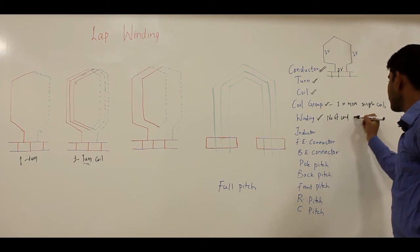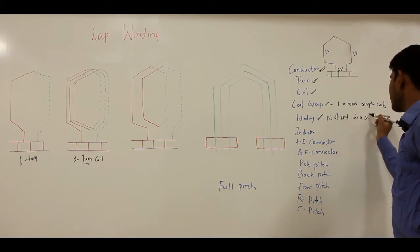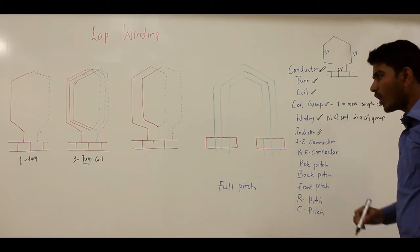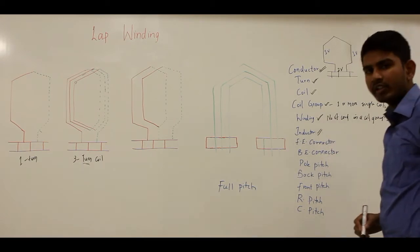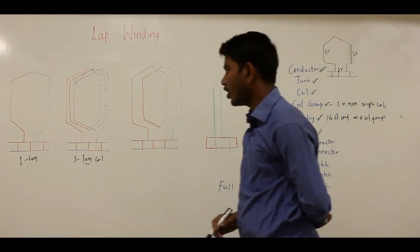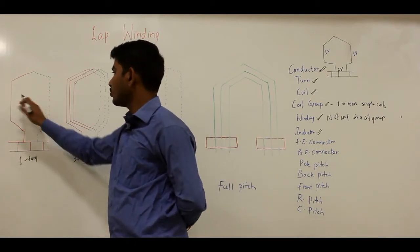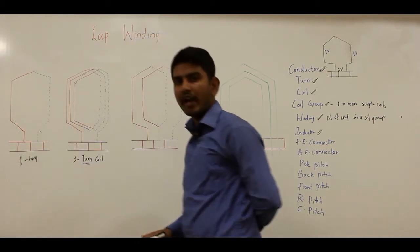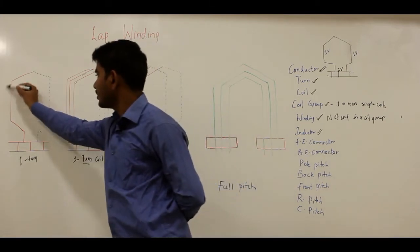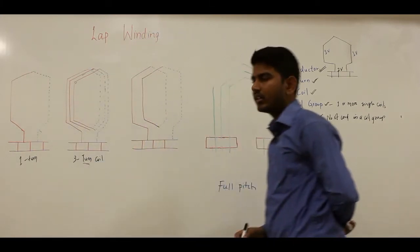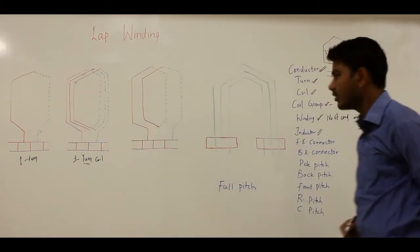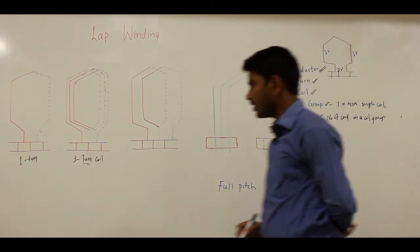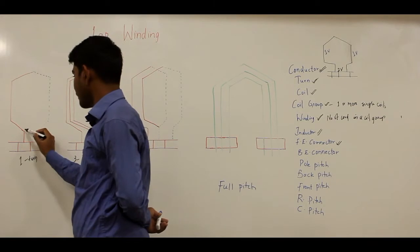Winding is the number of conductors in a coil group. An inductor is one of the wires forming the coil side. Basically a coil has two sides — this is one coil side and this is the other coil side. One of the wires forming the coil side is termed as an inductor.